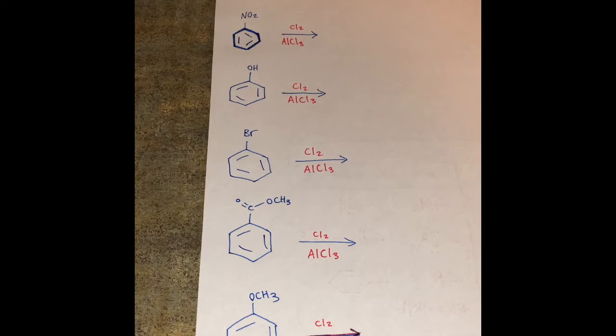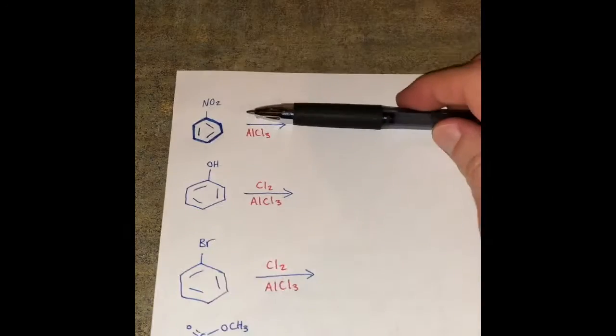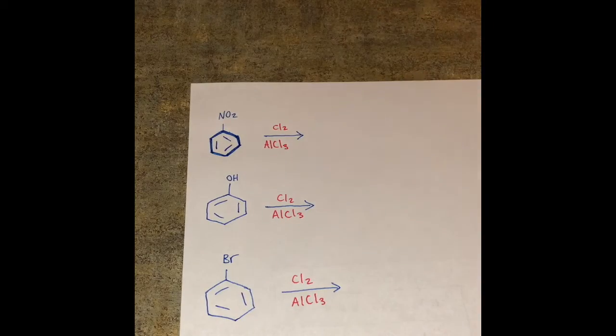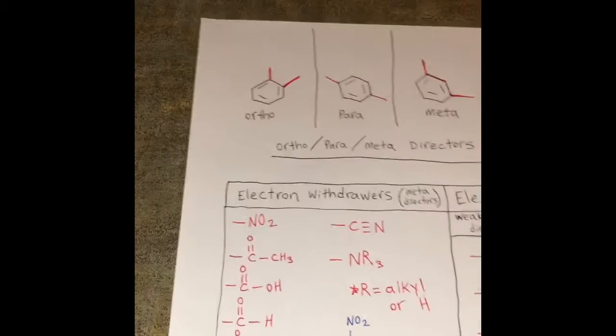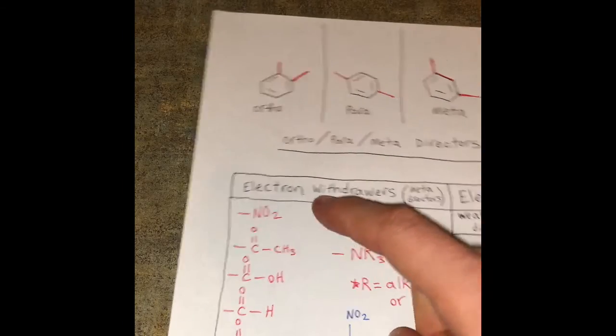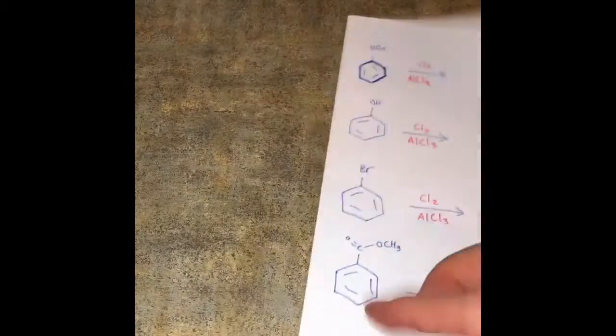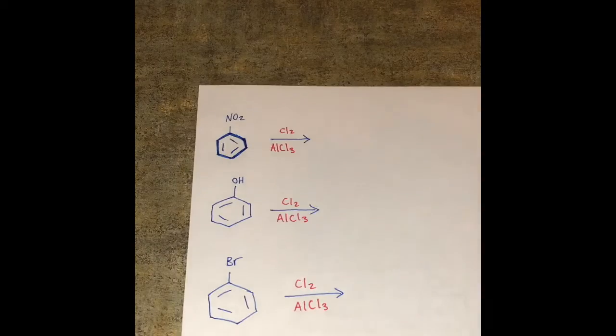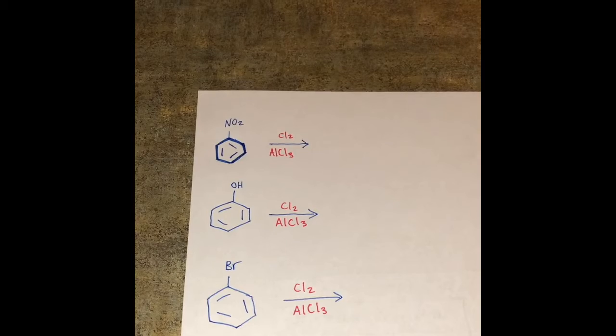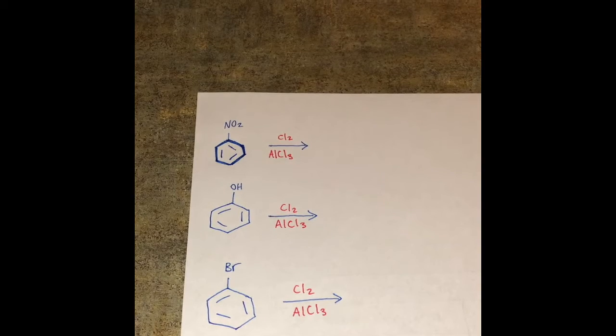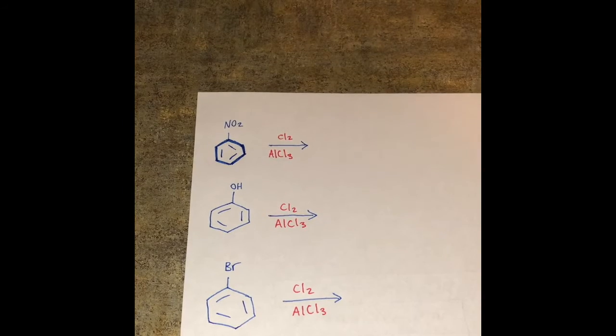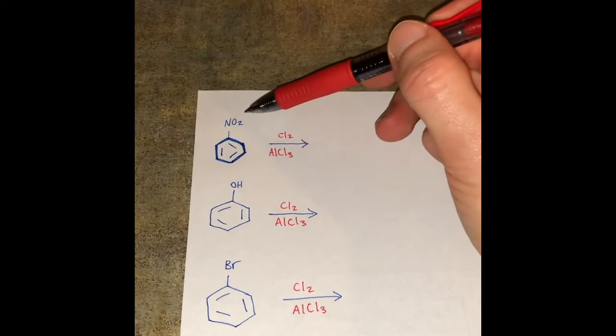So first we have up top a benzene with an NO2. Now if you remember from the chart we made, an NO2 is an electron withdrawing group, so it's a meta director. Now that's the first thing I do when I solve this type of problem is figure out where on the benzene we're going to add our group, and that is determined by what the substituent is.